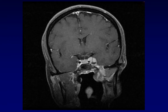Here's an example of that perineural spread. You can see the tumor along V3 coming through foramen ovale and up into Meckel's cave, which is expanded with nodular enhancement. And you can see it has also spread from there into the cavernous sinus.